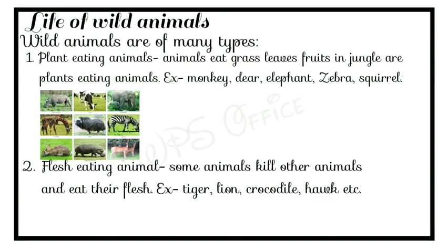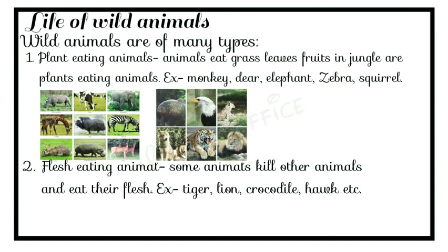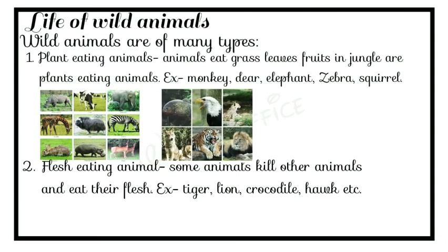Second, flesh-eating animals: some animals in the jungle kill other animals and eat their flesh. For example, tiger, lion, crocodile, hawk, and snake. Lions and tigers hunt living animals; crocodiles also catch and eat animals living in the water. Hawks also kill and eat smaller birds, and so do snakes.